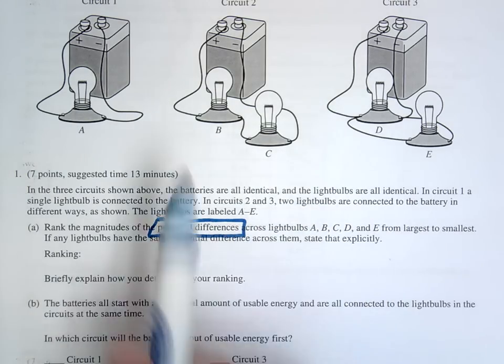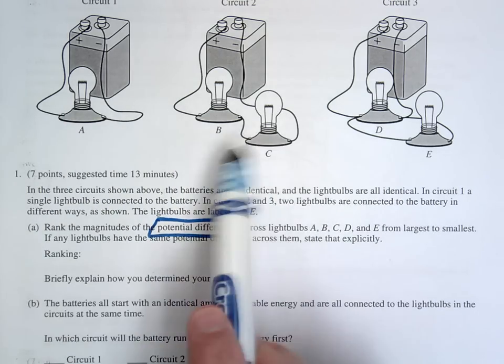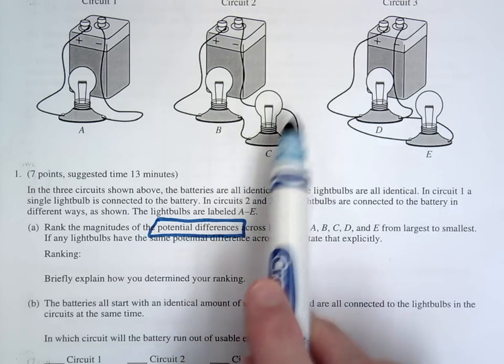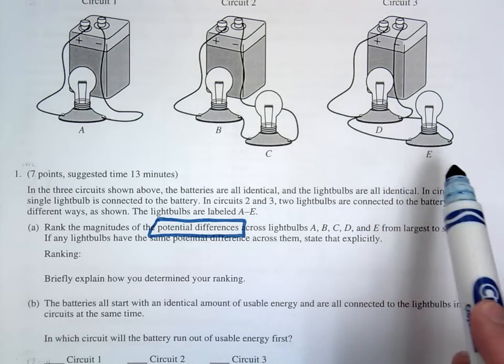Okay, so the first circuit is just a simple connection to a light bulb, second circuit is a series circuit, and the third circuit is a parallel circuit.